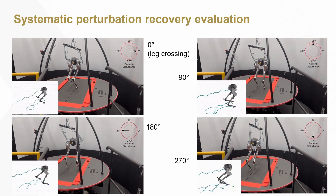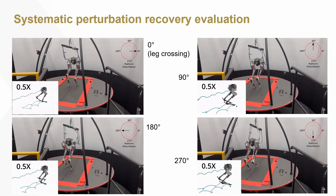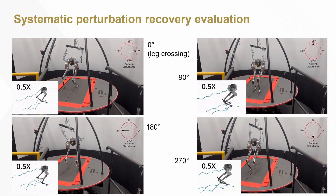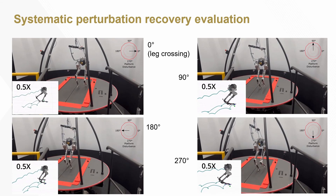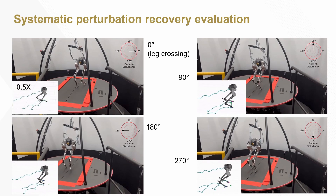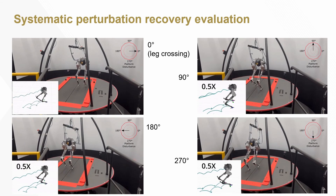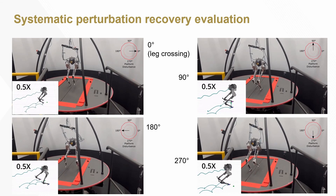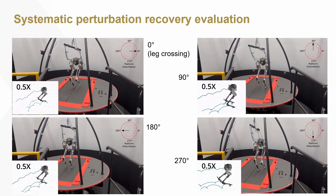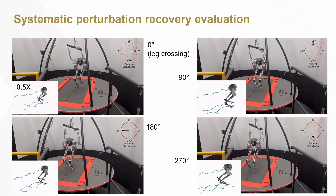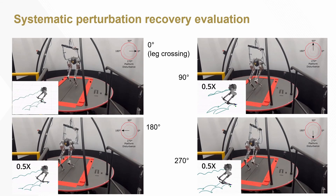Here we perform a thorough perturbation testing on the Cassie robot. The moving treadmill platform can apply a controlled amount of perturbation during a stable walking cycle, so we can have quantified and repeatable results of push recovery. We show four perturbation directions to represent the recovery behavior. When the platform perturbs at zero degrees, the robot is forced to cross its legs to recover back to normal. When the perturbation is at 90 or 270 degrees, the robot slows down and speeds up accordingly with no significant lateral movement. When the platform perturbs at 180 degrees, the robot takes a much larger wide step to stabilize itself.